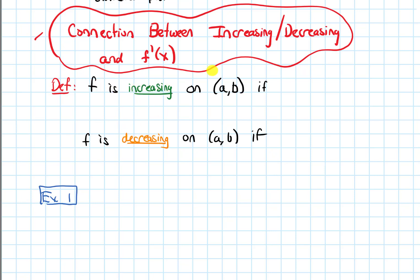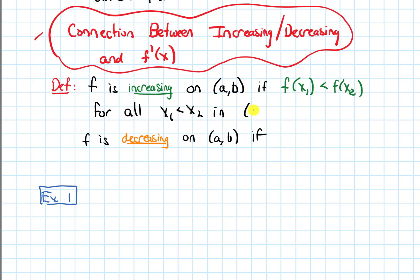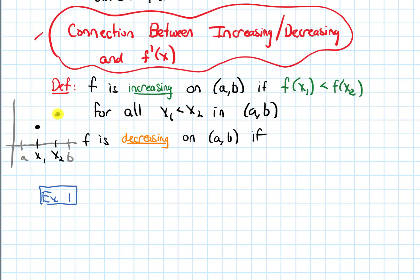f is increasing on an open interval from a to b if f of x1 is less than f of x2 for all numbers x1 and x2 where x1 is less than x2 in the open interval from a to b. If this is a and this is b, this definition says if I take any two numbers x1 and x2 in this open interval where x1 is smaller than x2, I need f of x1 — the y value at x1 — to be less than the y value at x2. The y value at x2 always has to be bigger, and conceptually that will make my function have this increasing shape.